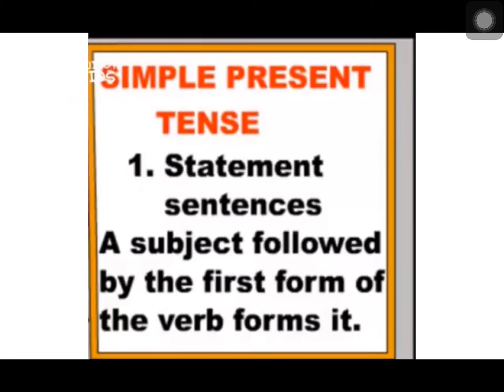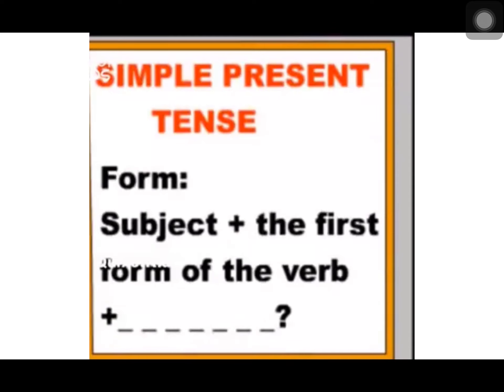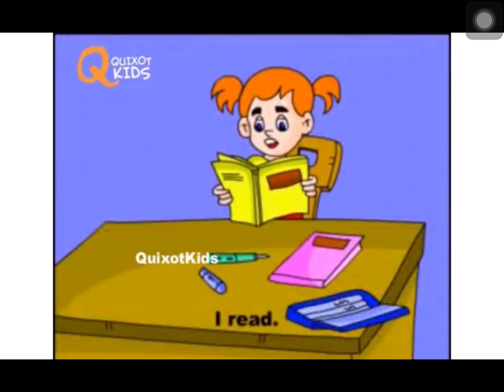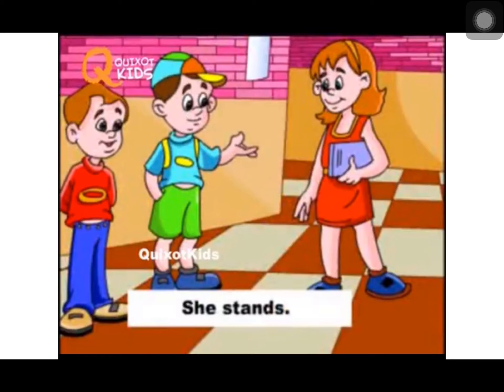A simple present tense is of four types. First one is statement sentences. A subject followed by the first form of the verb forms it. How we form simple present tense statement sentences: subject plus first form of the verb. For example: I read, she stands, they eat vegetables.